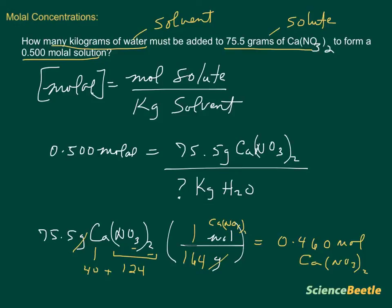Then we use this number to replace up top. So I'm going to scratch it out here, and I'm going to replace it with the moles that we just found, which is 0.460 moles of Ca(NO3)2.